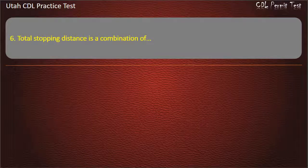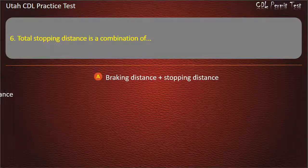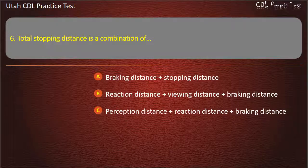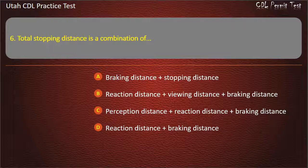Question 6. Total stopping distance is a combination of: Breaking distance plus stopping distance. Reaction distance plus viewing distance plus breaking distance. Perception distance plus reaction distance plus breaking distance. Reaction distance plus breaking distance. Answer: Perception distance plus reaction distance plus breaking distance.